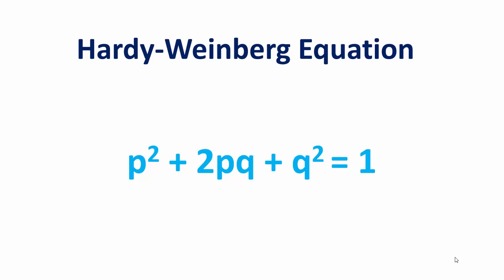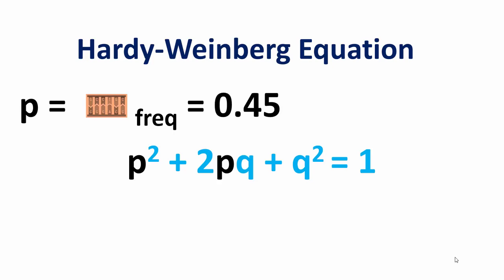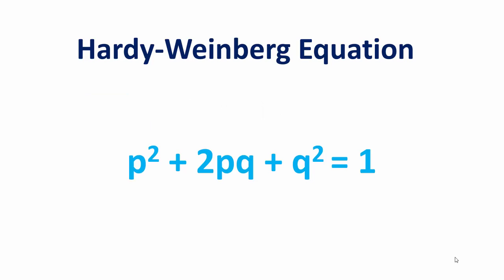The Hardy-Weinberg equation has three terms — p², 2pq, and q² — made up of two variables, p and q. Each variable represents the frequency of an allele. So let's say p is equal to the frequency of the brown allele. We already know, because we did this math, that the frequency of the brown allele in our original population was 0.45. So instead of looking at the variables, let's take a look at the terms and start with what p² means.